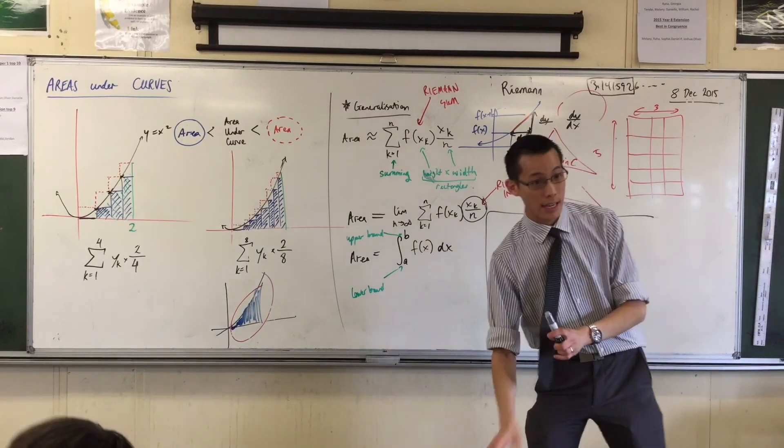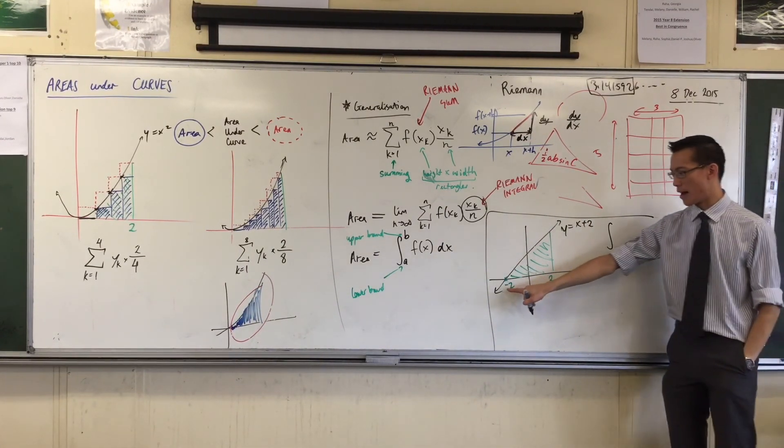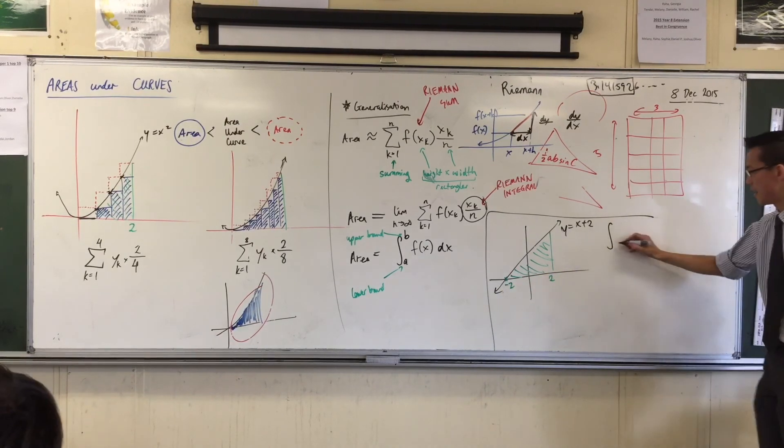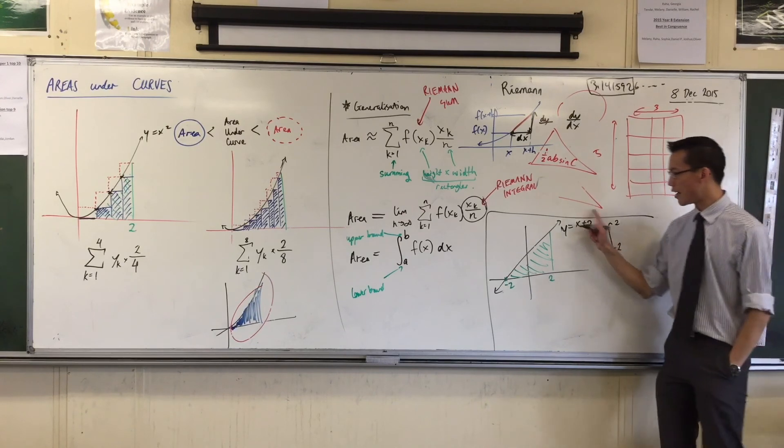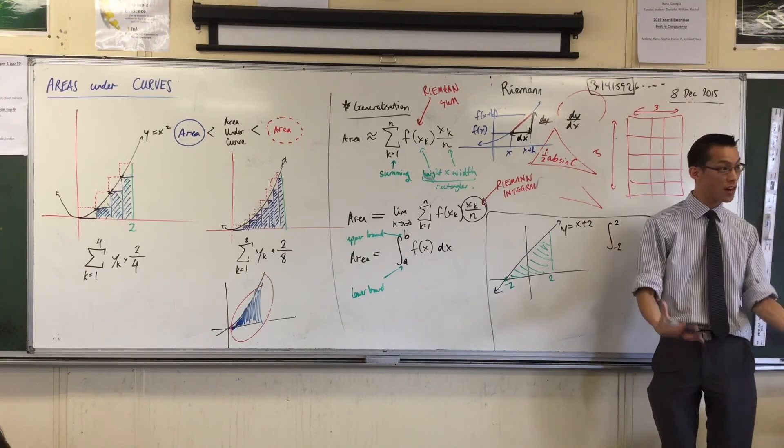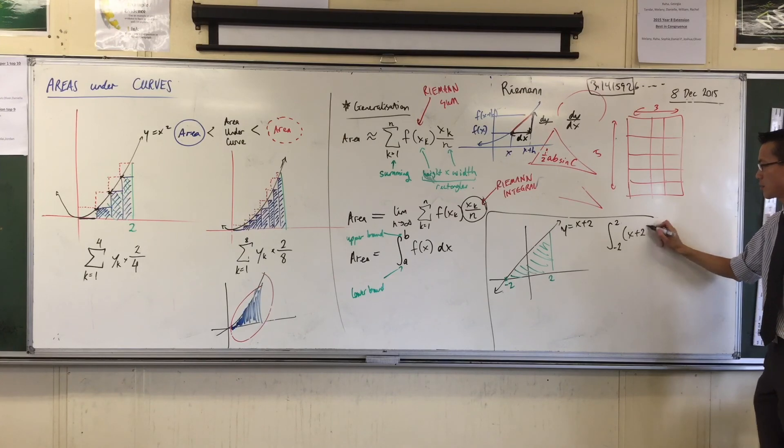The way I would write this is, I would say, the integral from this boundary to this boundary, negative 2 to 2, of this particular function, that's the function I'm interested in that defines this curve. So I'm going to say x plus 2.